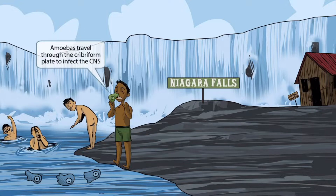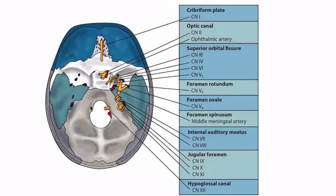This boy was just attacked by one of those Naegleria amoebas — you can see it going up his nose. This represents the fact that Naegleria swims up the nose and penetrates the cribriform plate in order to reach the CNS. The cribriform plate is where the fibers of the olfactory nerve, cranial nerve 1, exit the brain and reach the nose. Naegleria amoebas travel through the nose while someone is swimming in fresh water, then travel through the cribriform plate and infect the brain.